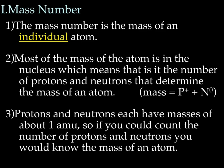And hopefully, as you know from yesterday, most of the mass of the atom is in the nucleus, which means that it's actually just the number of protons and neutrons that determine the mass of the atom. Remember, the mass of both a proton and a neutron are 1 amu. So if you could count the number of protons and neutrons you would know the mass of an atom. And the equation we discussed was mass equals number of protons plus number of neutrons.